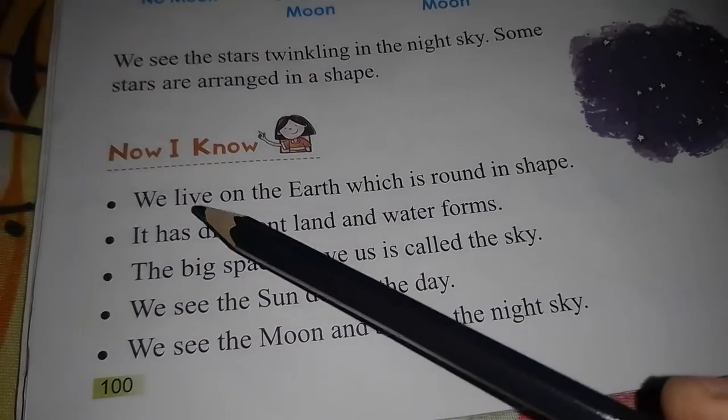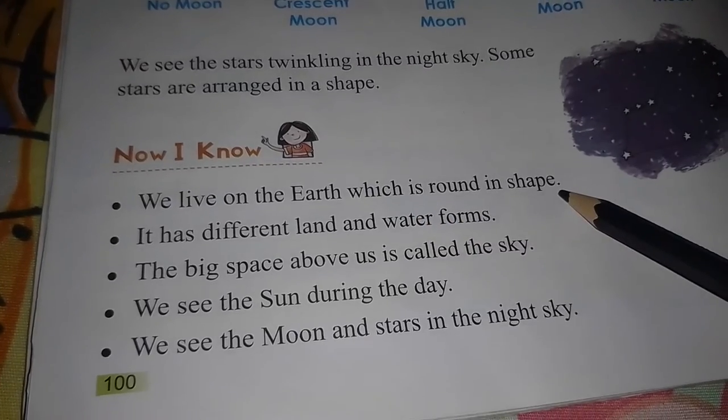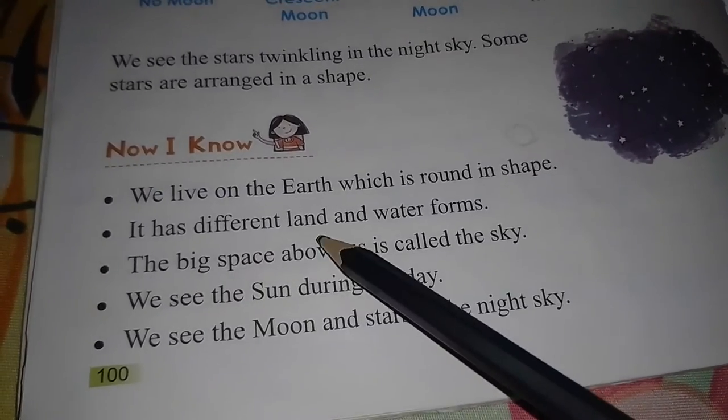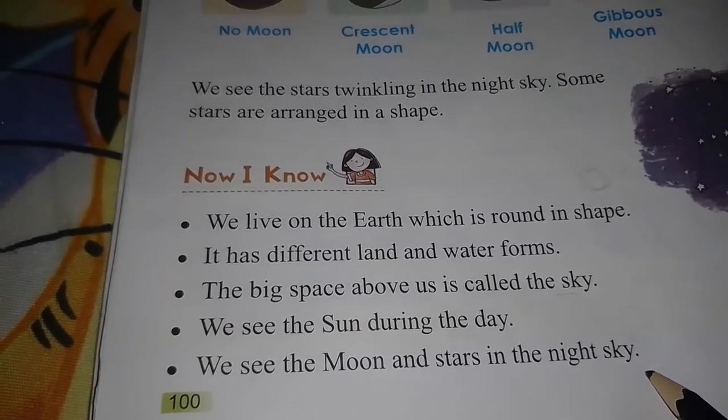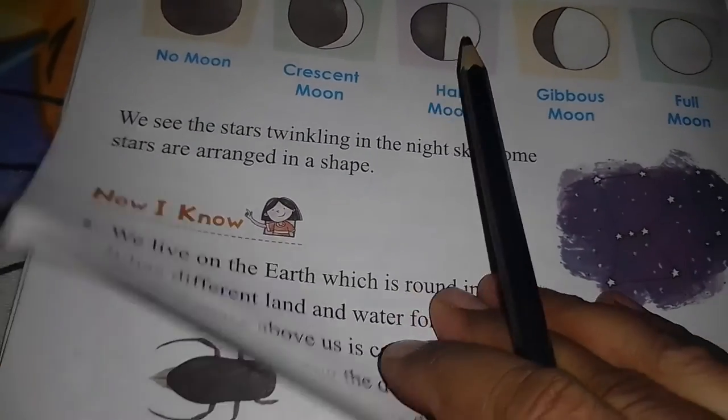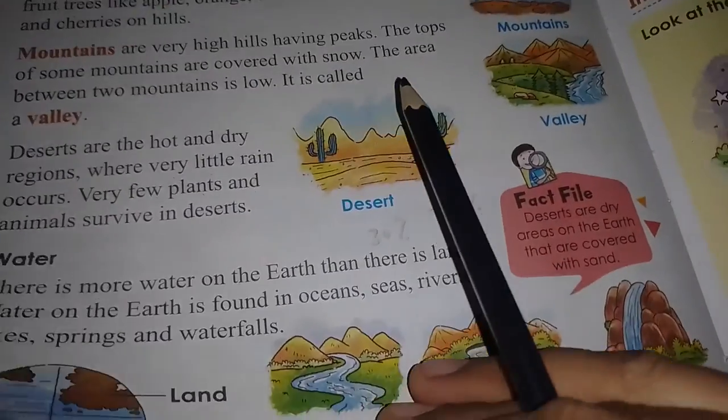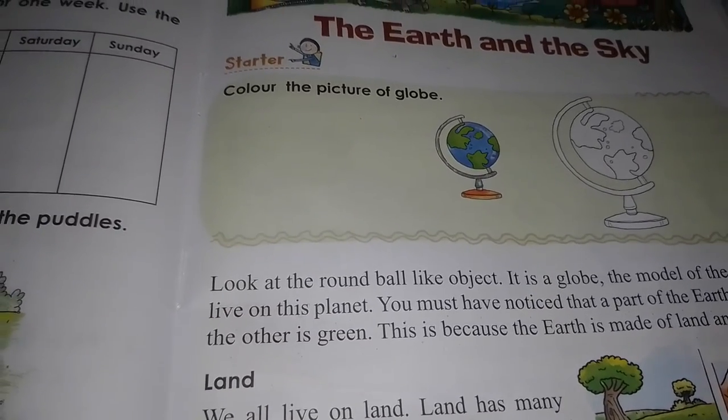These are the key points from the chapter: We live on the earth which is round in shape. It has different landforms and water bodies. The big space above us is called the sky. We see the sun during the day, and the moon and stars in the night sky. If you have any problem regarding this chapter, please comment and I will reply. Thanks and have a nice day.